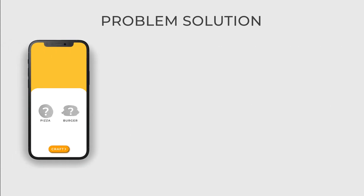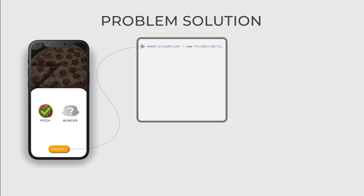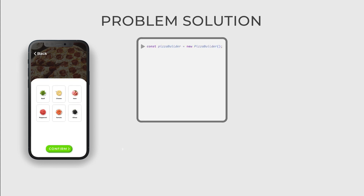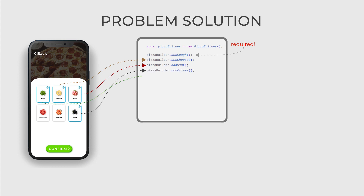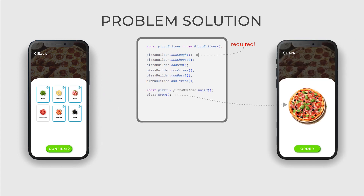Now we are ready to create a specific product. When the user selects the product they want, we will create a new instance of pizza builder. We will then add all the ingredients selected by the user to the product and get a built product that we can already draw on the screen. Concrete builders know how to apply those specific ingredients to their product and how to build it at the end.